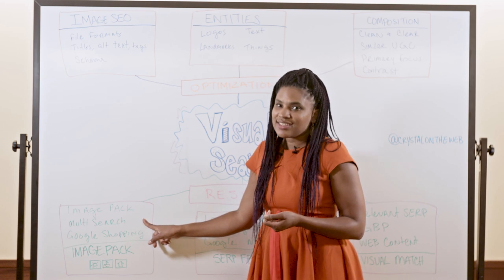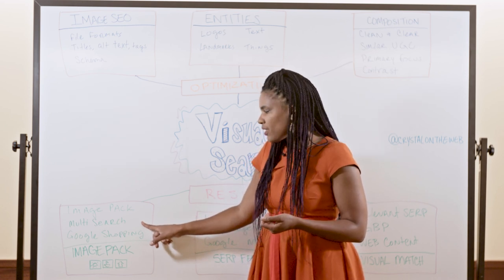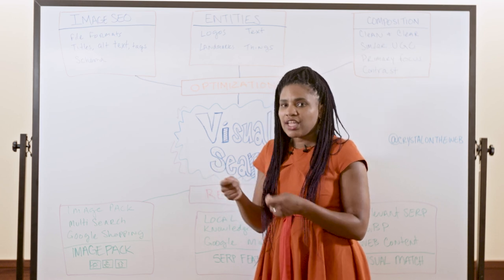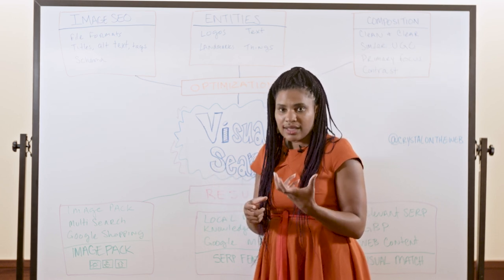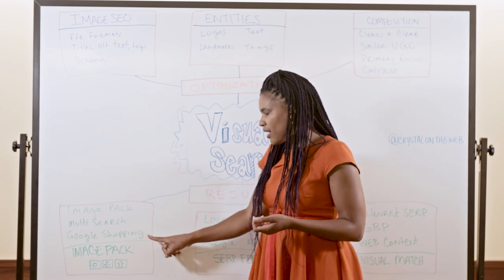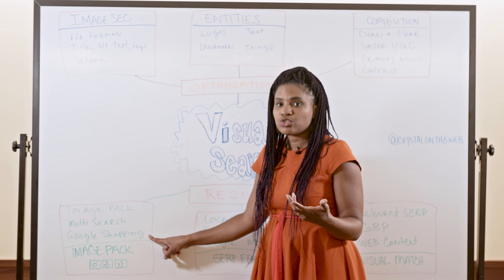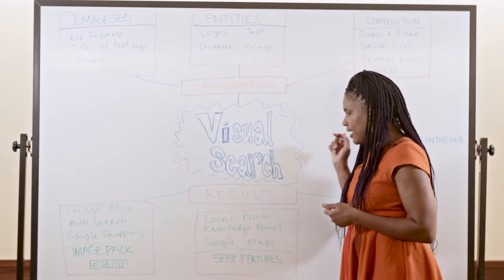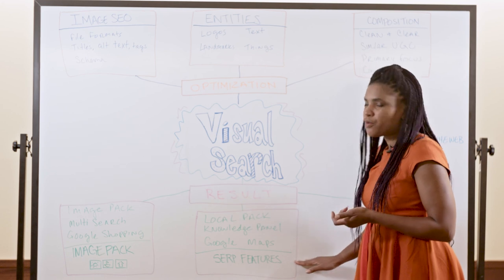And also in the chocolate donut example in particular, it might return something like multi-search. So for instance, you would do a modification. Like you might say, chocolate donut, like a donut like this, but with sprinkles maybe, for instance. You might also get a result that's around Google Shopping, for instance. The other one you want to think about is the kinds of result you might get for different SERP features.